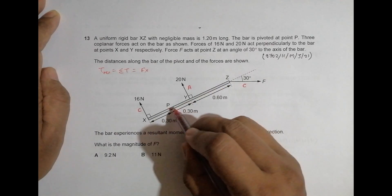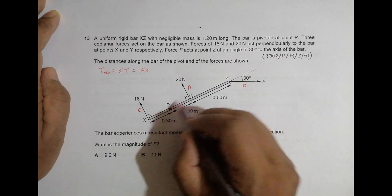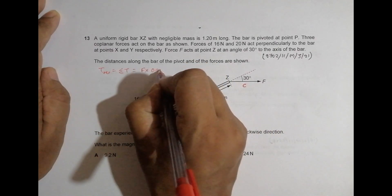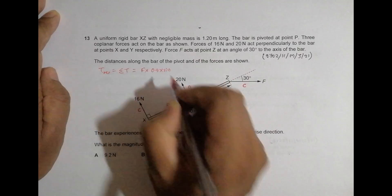Radius is this much, which is PZ, and PZ is 0.3 plus 0.6, it is 0.9, into sine of the angle between direction of force and this radius.